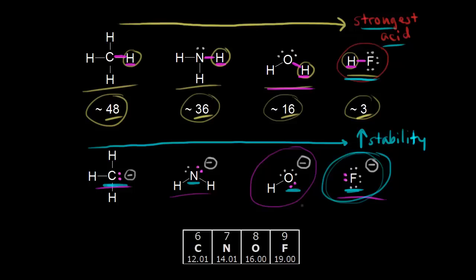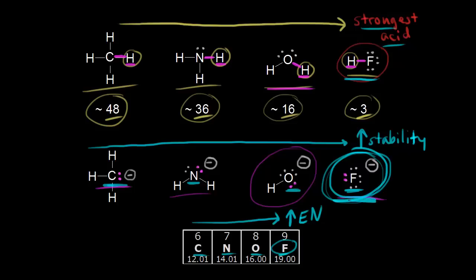That's the same trend as electronegativity. If you look at carbon, nitrogen, oxygen, and fluorine — as you move to the right on the periodic table, you increase in electronegativity, with fluorine being the most electronegative element. The most electronegative element attracts electrons the most; it likes to have electrons around it. Therefore, it makes sense that fluorine is the best at stabilizing a negative charge, making the fluoride anion the most stable conjugate base and HF the strongest acid. When thinking about acid strength, consider the stabilization of the conjugate base — electronegativity is one of those key factors.